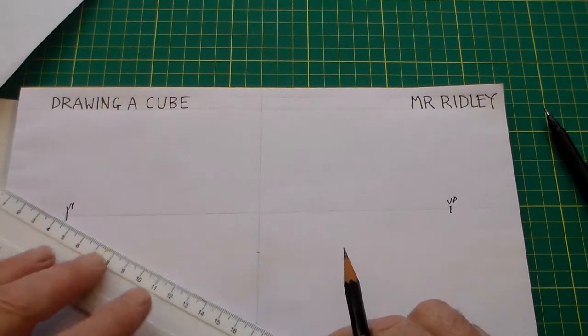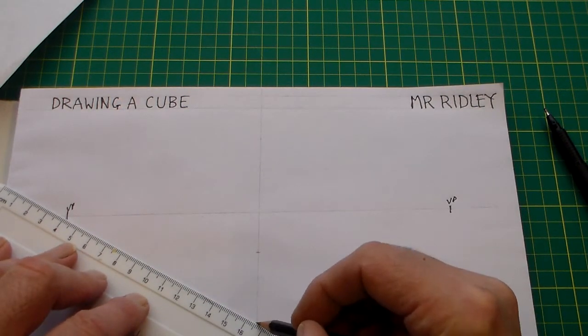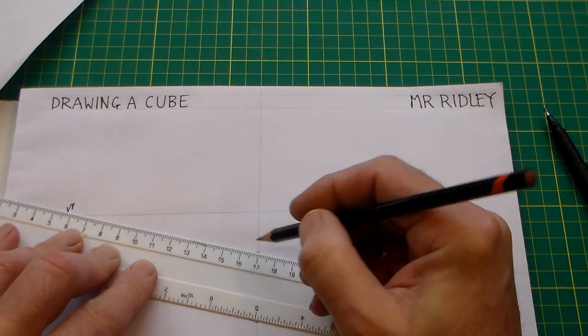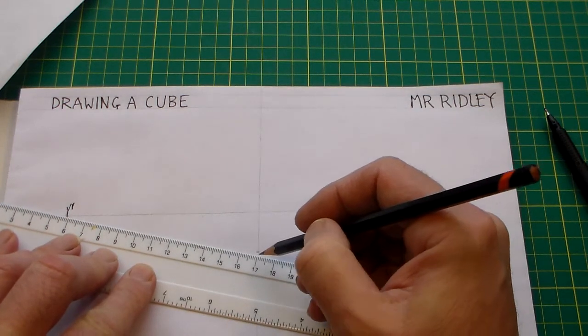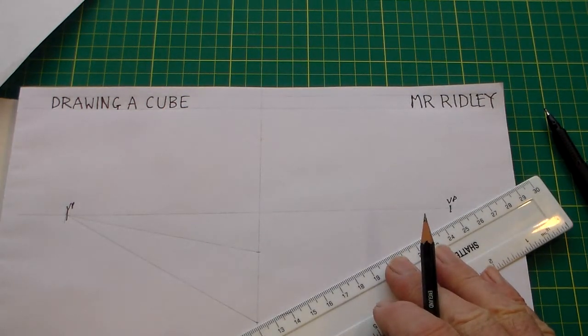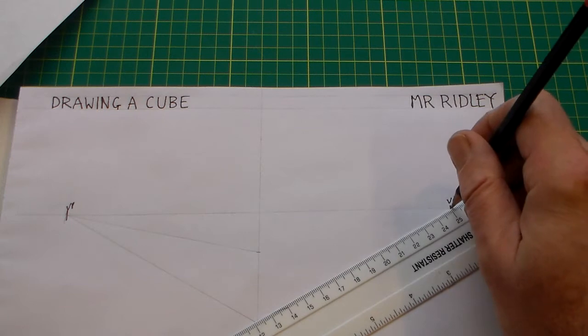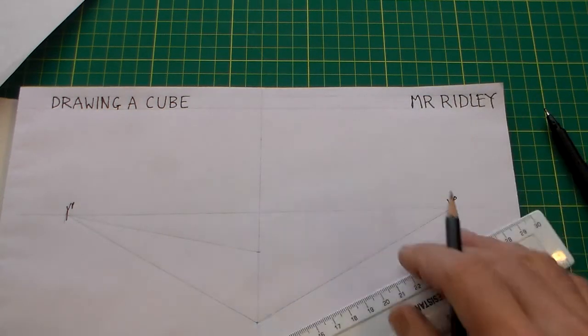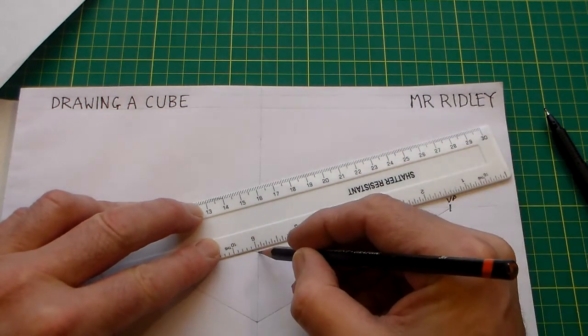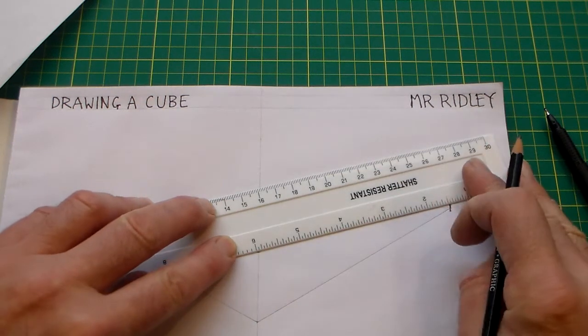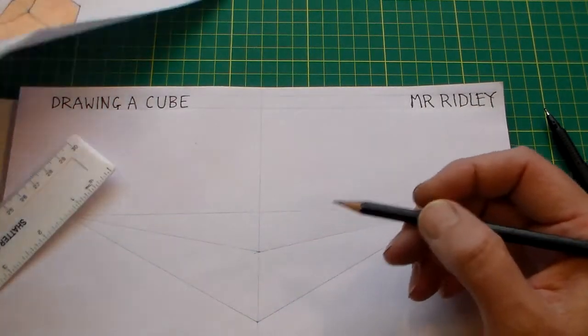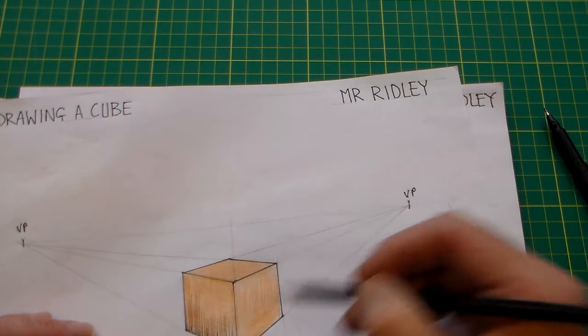Then what we're going to do is draw a line from this point to the vanishing point, and then from this point here to the vanishing point, then from this point here to the vanishing point and from there. If you put the ruler on one point and then keeping it on that point move it to there, that's the best way of doing it. So now we can see that we've created these two parts here.